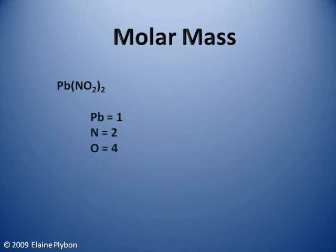The molar mass of a compound is the total number of grams that are in one mole of that compound. Let's calculate the molar mass of this compound. We begin with determining how many of each element are in the compound. Next, we look at a periodic table to determine how many grams are in one mole of each element. The atomic mass, which is located under the symbol for each element, will give you the number you need to use.